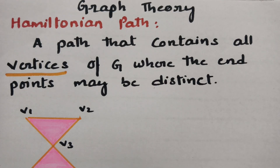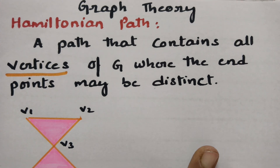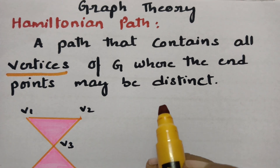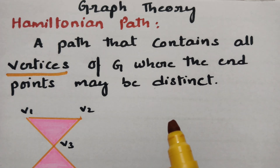In today's video I am going to explain what is Hamiltonian path, Hamiltonian circuit, and Hamiltonian graph, and this topic is from graph theory. Sir William Hamilton, an Irish mathematician, introduced the problems of finding a circuit in which all the vertices of the graph appear exactly once.